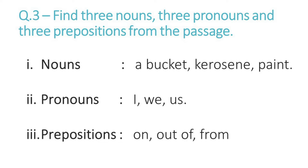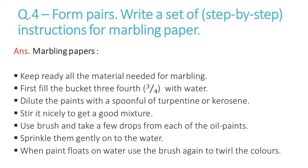Question number four: form pairs and write a set of step-by-step instructions for marbling paper. Here are the instructions. First, keep ready all the material needed for marbling. Then fill the bucket and pot with water. Next, dilute the paints with a spoonful of turpentine or kerosene to thin them slightly. Stir it nicely to get a good mixture of paint.